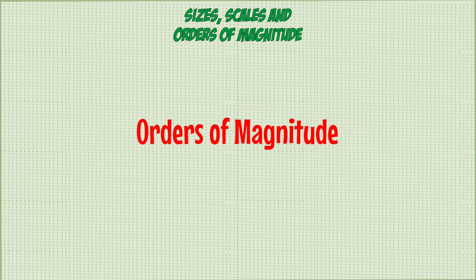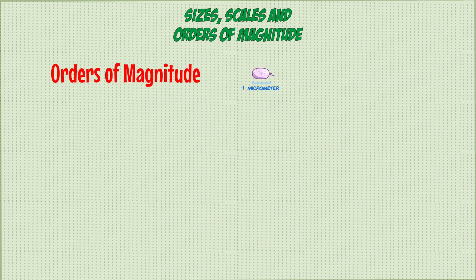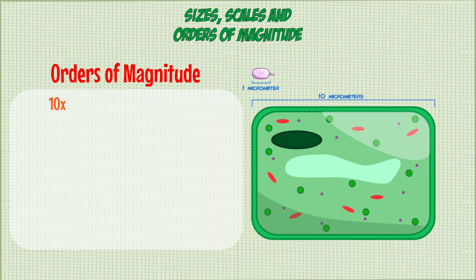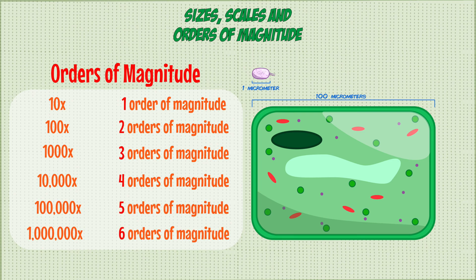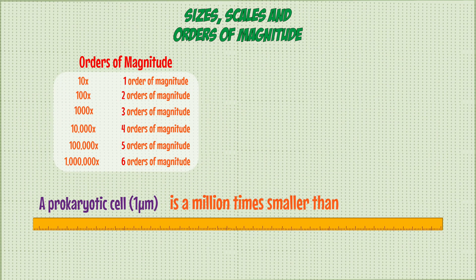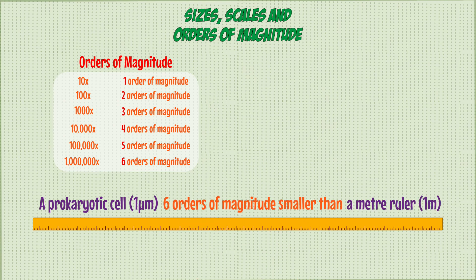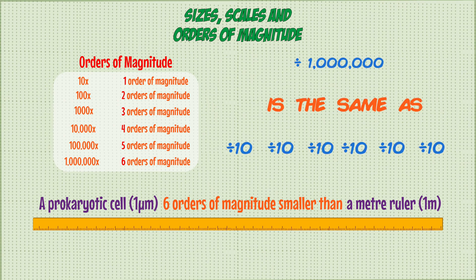You can also use orders of magnitude to make rough comparisons of sizes or quantities between two different things. For example, if a bacteria cell is 1 micrometer and a plant cell is 10 micrometers, the plant cell is 10 times bigger — or one order of magnitude bigger. For every 10 times an object is larger, the order of magnitude increases by one. So 100 times larger is two orders of magnitude, 1,000 times is three, 10,000 is four, and so on. Earlier we said prokaryotic cells are a million times smaller than a meter ruler — another way to say this is six orders of magnitude smaller, because dividing by a million is the same as dividing by ten six times.